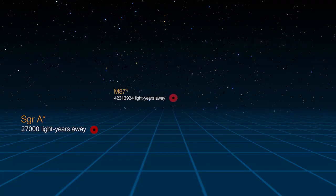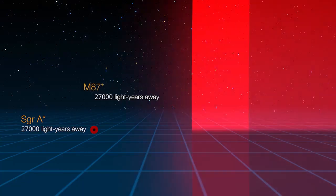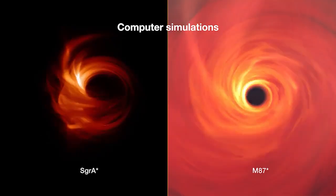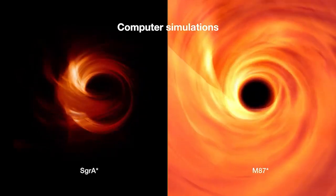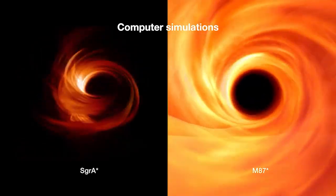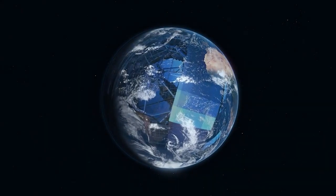M87's black hole is far larger than Sagittarius A star. Therefore, changes take days to become noticeable. But Sagittarius A star is much smaller, and the brightness of the ring may alter in only minutes as material whips around it.